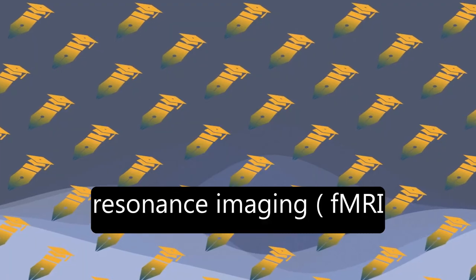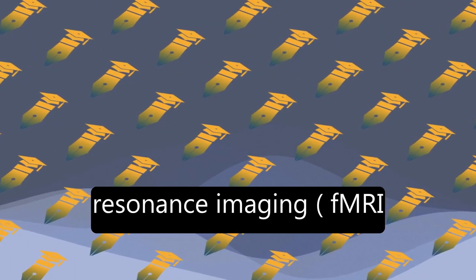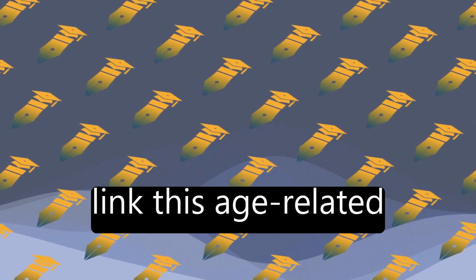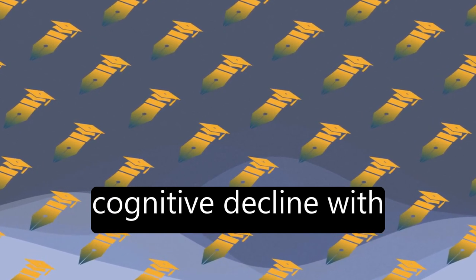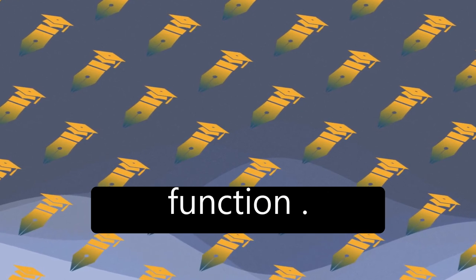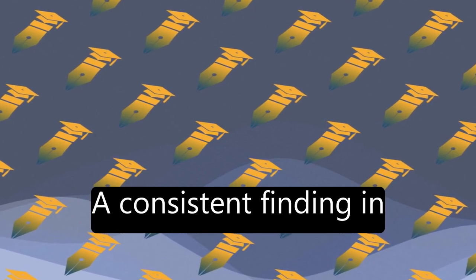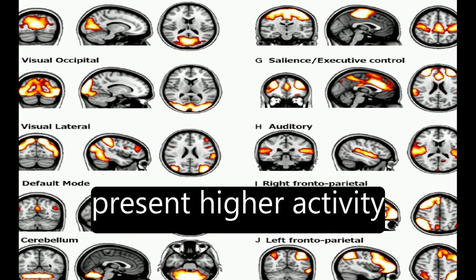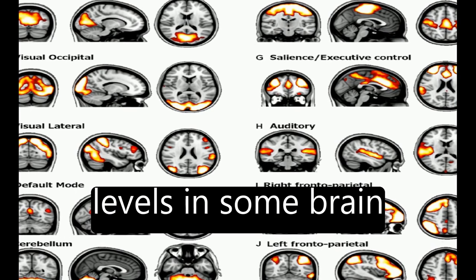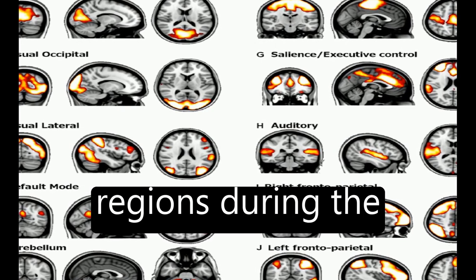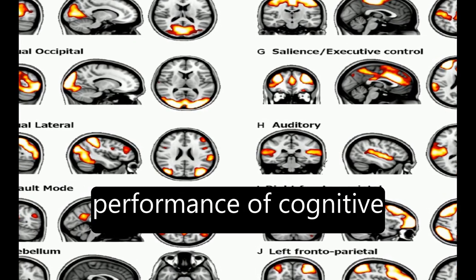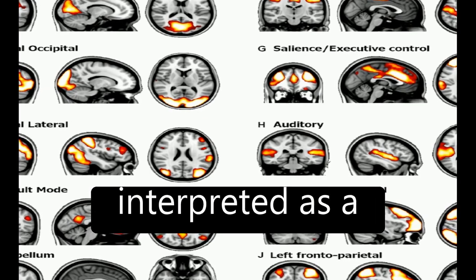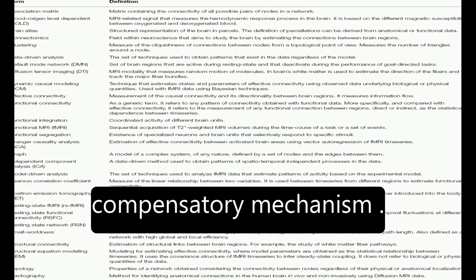Functional magnetic resonance imaging, fMRI, has been widely used to link this age-related cognitive decline with patterns of altered brain function. A consistent finding in the fMRI literature is that healthy old adults present higher activity levels in some brain regions during the performance of cognitive tasks, which is usually interpreted as a compensatory mechanism.